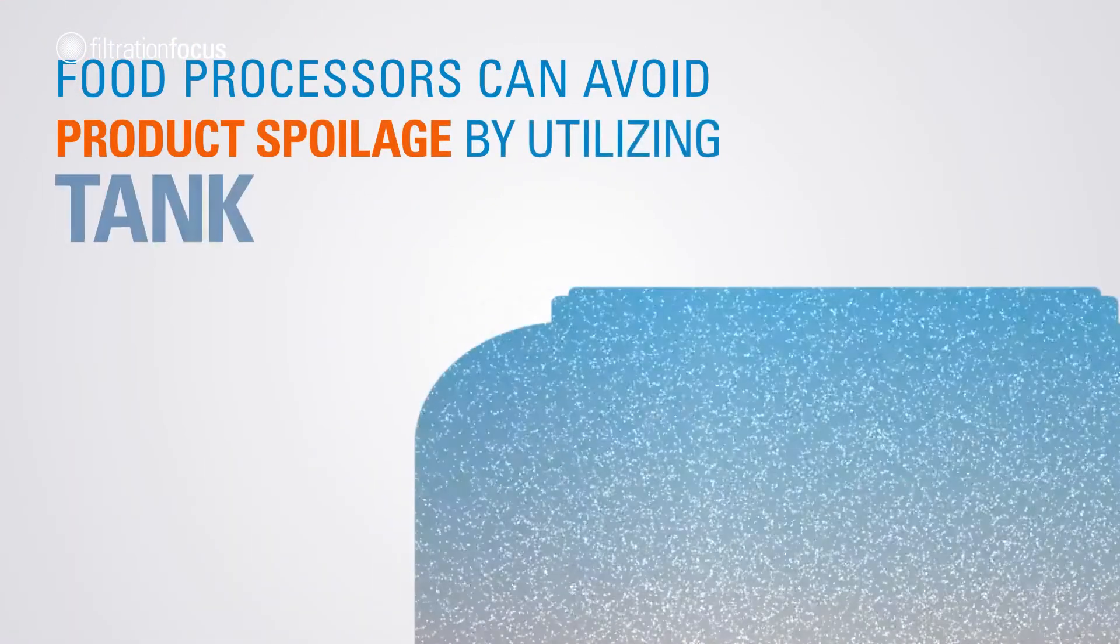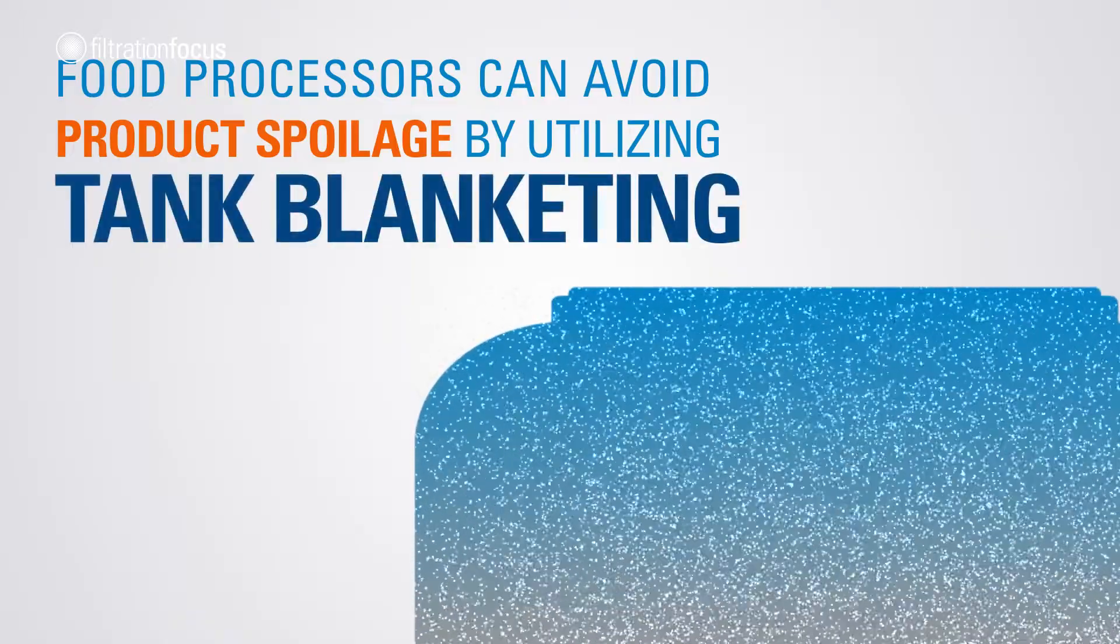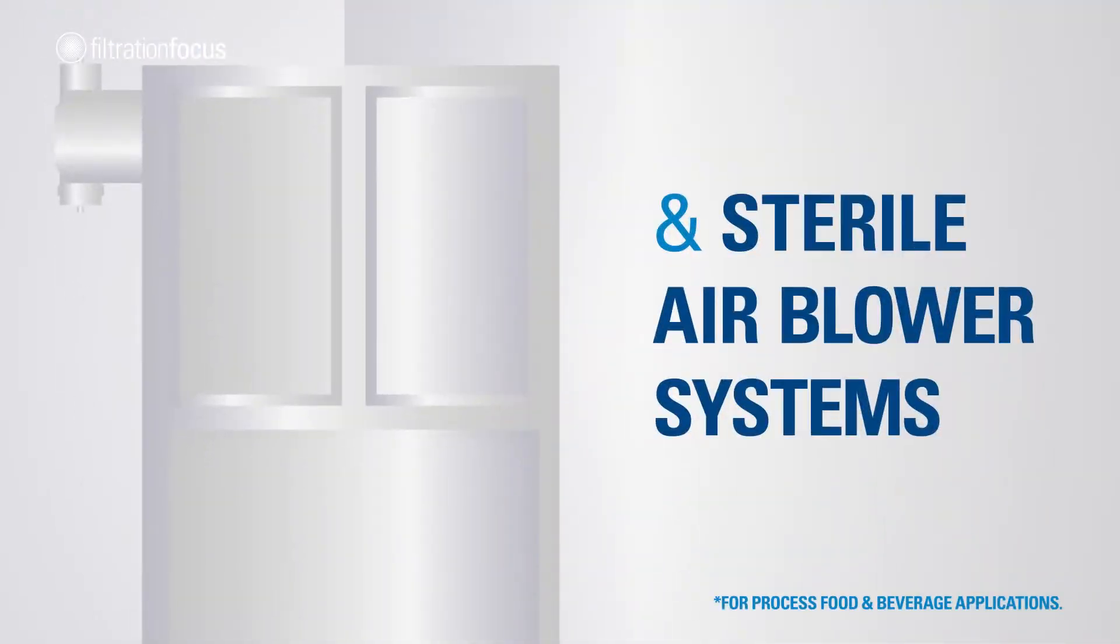Food processors can avoid product spoilage by utilizing tank blanketing and sterile air blower systems.